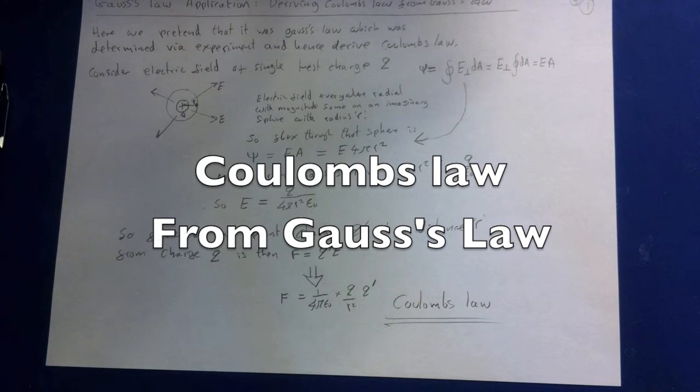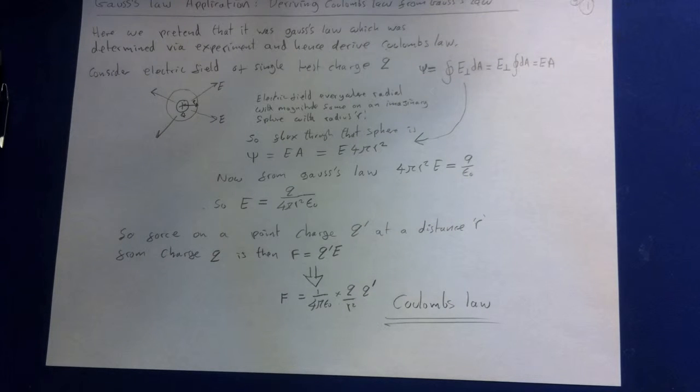So what we're going to do is pretend that it was Gauss's law which was determined through experiment first, and then derive Coulomb's law from it by obtaining the expression for the electric field E due to a point charge.